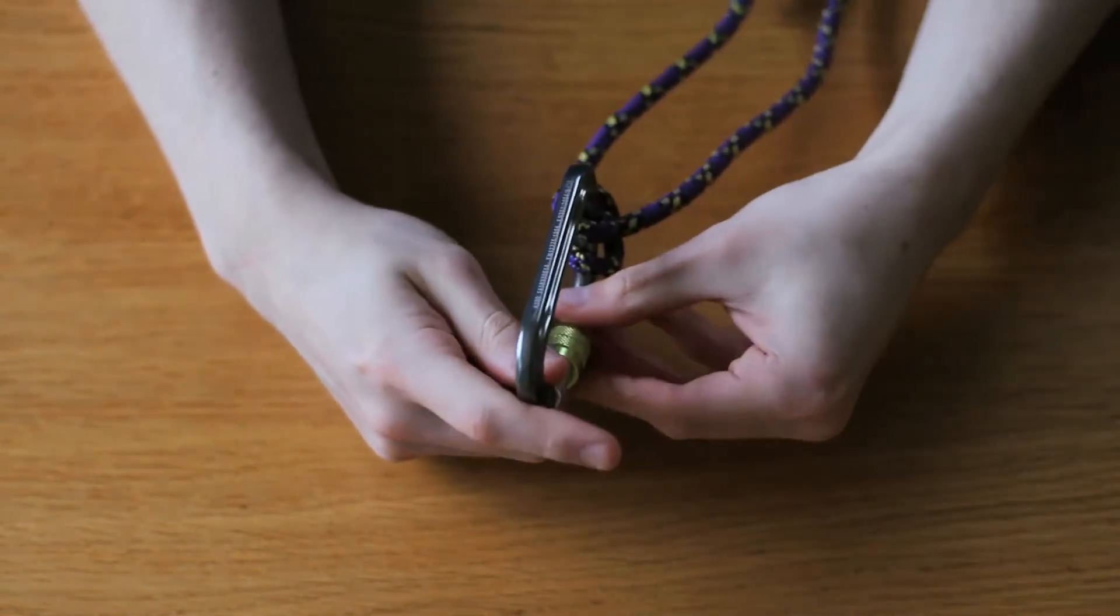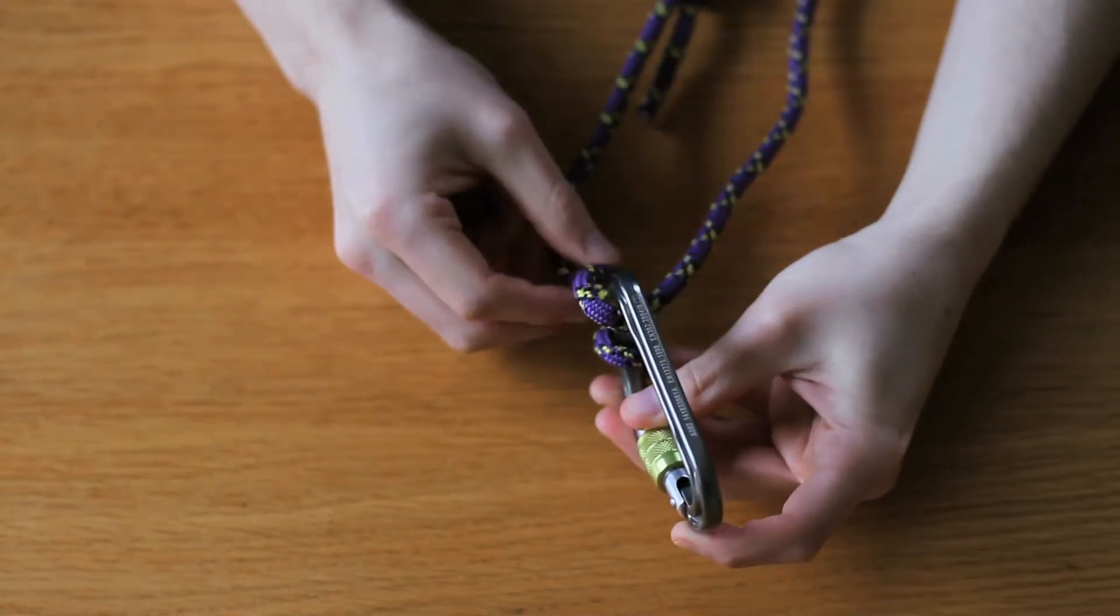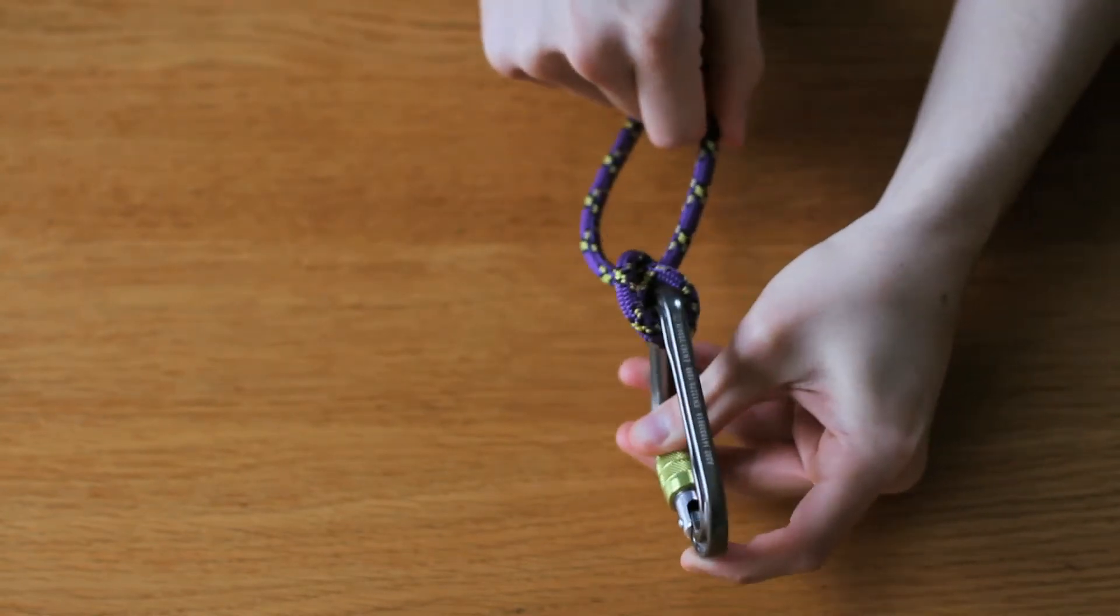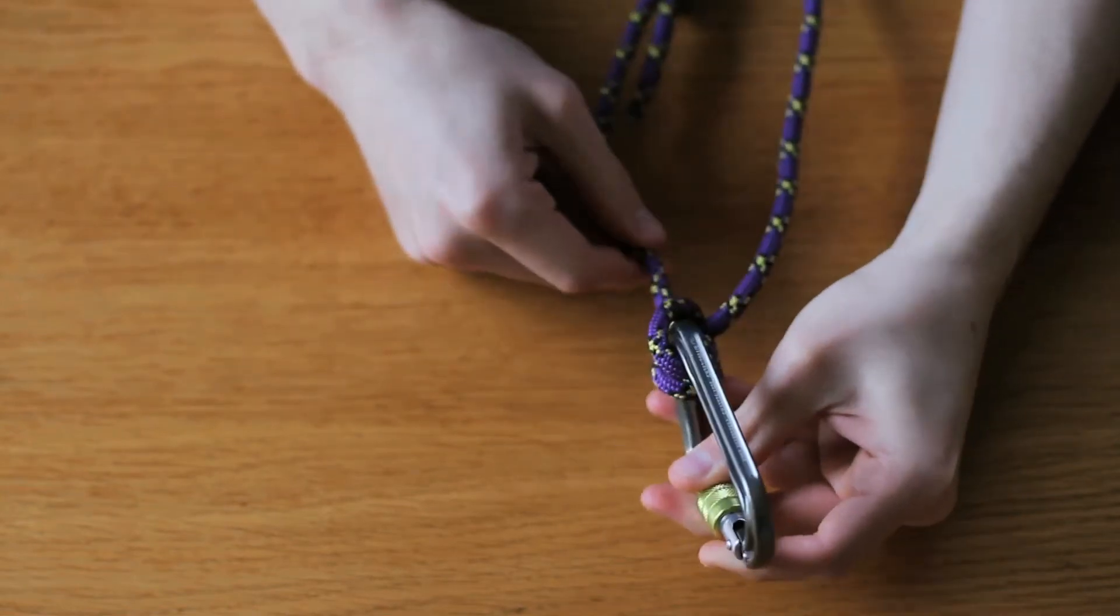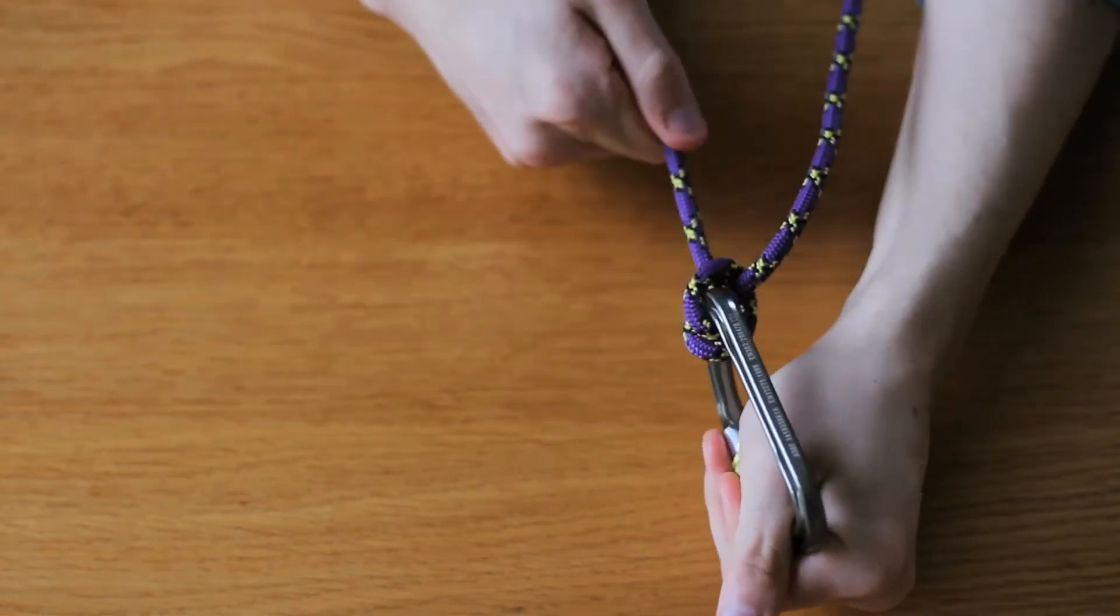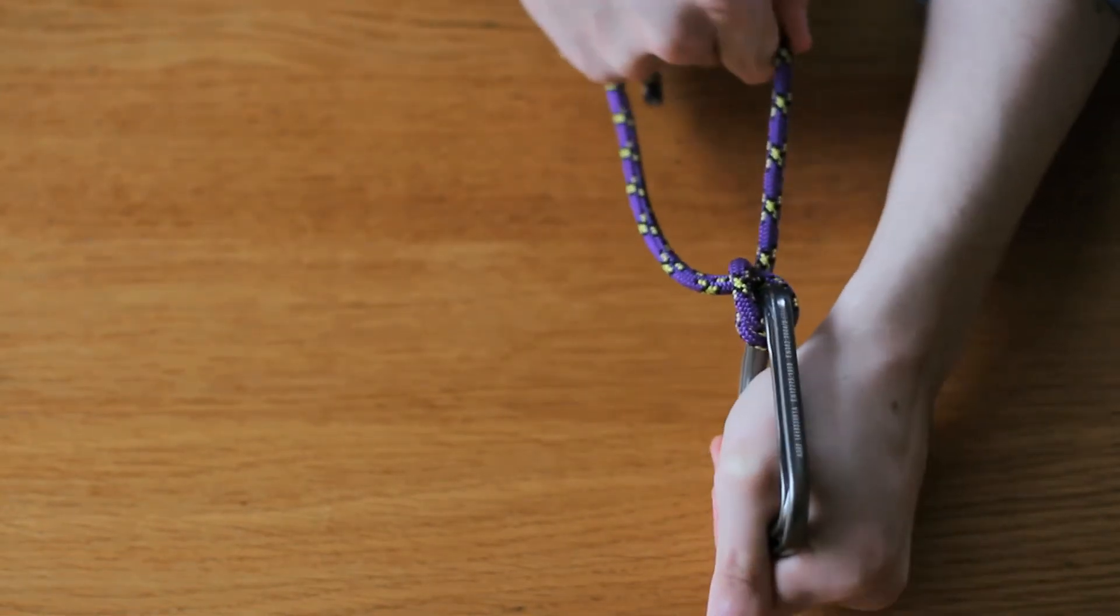Then what you can do to equalize the system is simply push a little bit of rope through and then pull the other tail of the clove hitch. And as you can see, you've got that super easy adjustability with the knot, with all the locking security features that it brings.